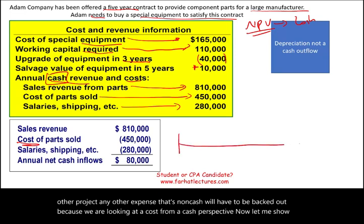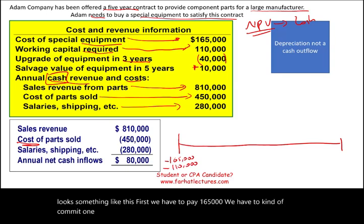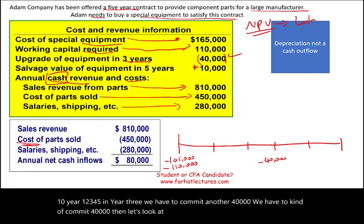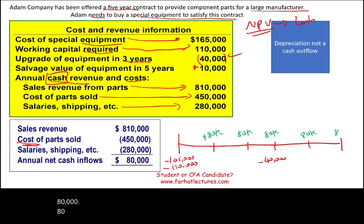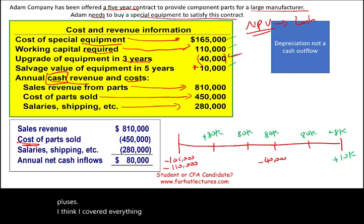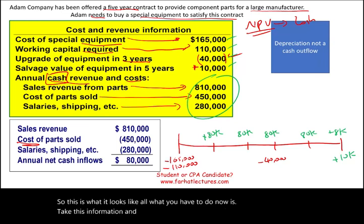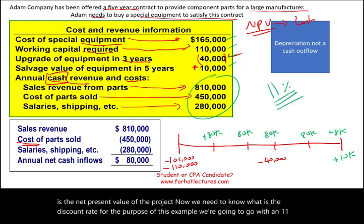Let me show you on a timeline what this looks like. At time zero, we pay $165,000 and commit $110,000 — two large negatives. Then years one through five, each year we get $80,000 in cash inflows. In year three, we also pay $40,000 for the equipment upgrade. At year five, there's also the $10,000 salvage value. All of this needs to be discounted. For this example, we'll use an 11% discount rate.